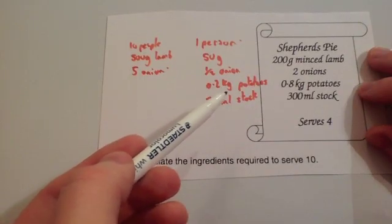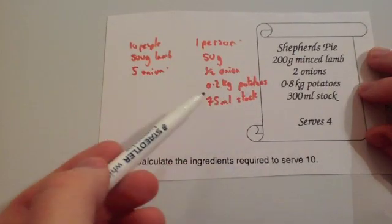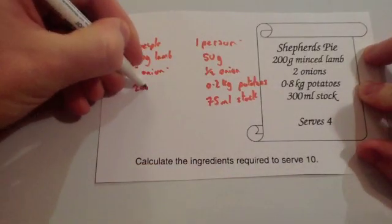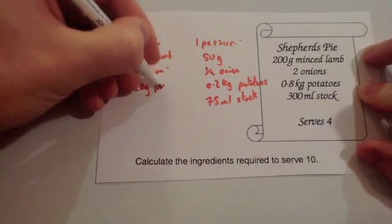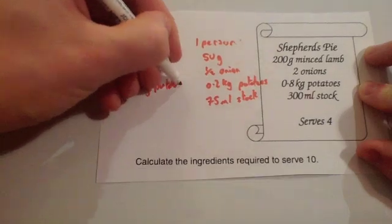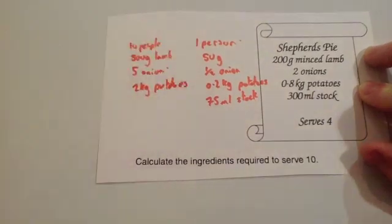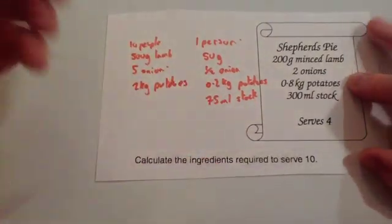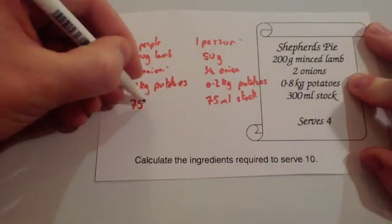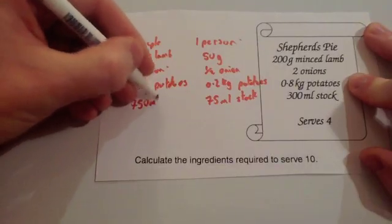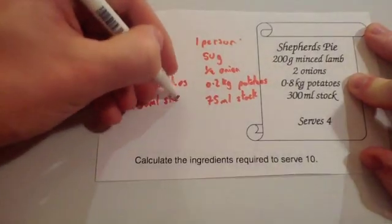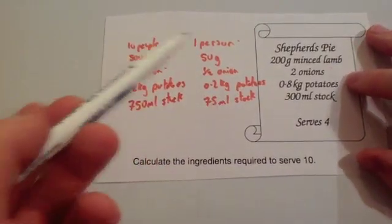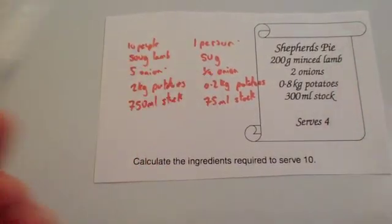0.2 kilograms of potatoes times 10: 0.2 times 10 is 2, so you're going to need 2 kilograms of potatoes. And 75 ml times 10 would be 750 ml of stock. So that's the way I would do this question.